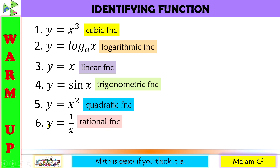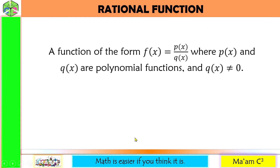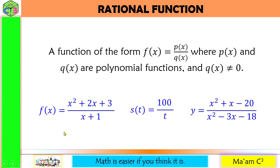Today's discussion will focus on the rational function. You have learned that a rational function is a function of the form f(x) = p(x) / q(x), where p(x) and q(x) are polynomial functions and q(x) is not equal to 0. Here are some examples: the name of the function, an equal sign, and a polynomial divided by a polynomial where the denominator is not equal to 0.